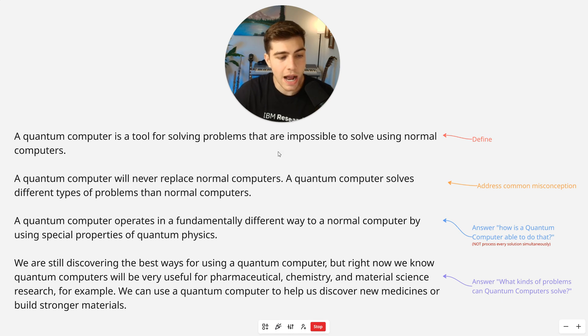Next, a quantum computer operates in a fundamentally different way to a normal computer by using special properties of quantum physics. Now this is going to answer the question of how is a quantum computer able to do these impossible things? And the general solution that people say is a quantum computer processes all the different combinations simultaneously. That's not true. That is simply just not true.